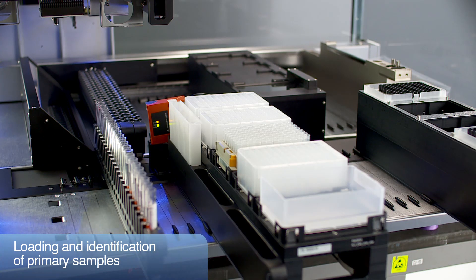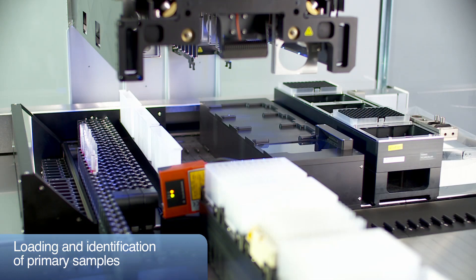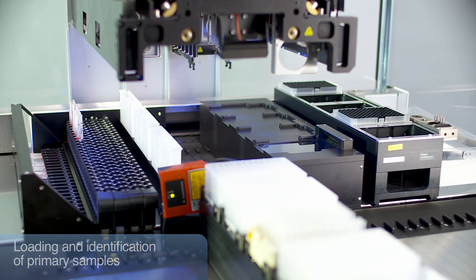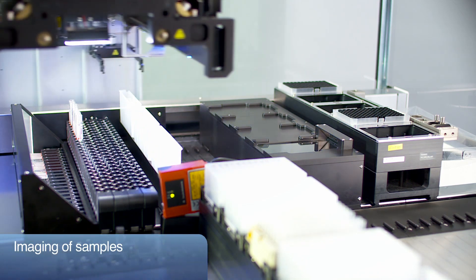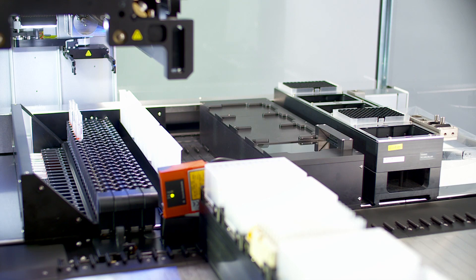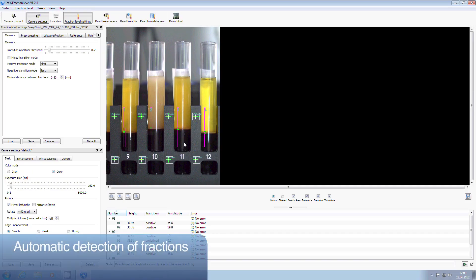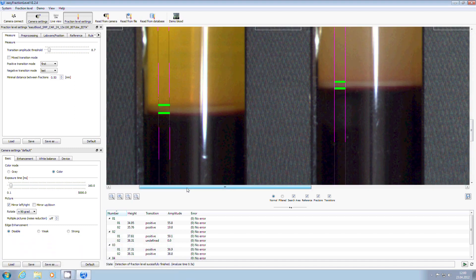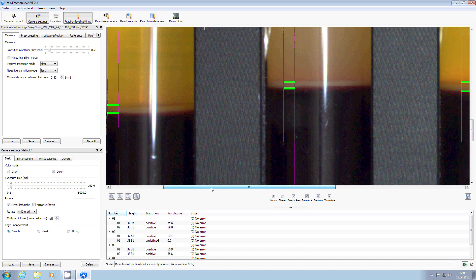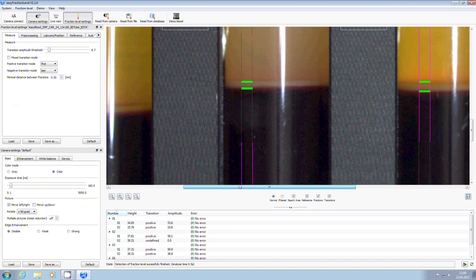The system automatically loads centrifuged and decapped samples in up to eight carriers at once while verifying the barcode and, if necessary, communicates with an LIS for data exchange. The high-resolution camera images four tubes at a time, and the EasyFraction Level software performs the analysis based on various customizable settings to ensure the highest detection reliability.